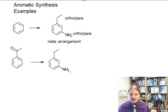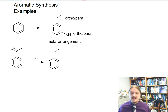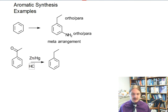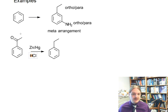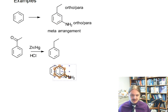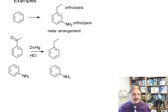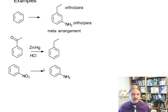For example, we can reduce a ketone to the hydrocarbon using the Clemmensen reduction. And we can reduce a nitro group to the amine using a variety of reducing agents — let's just pick iron and hydrochloric acid for the sake of this reaction.